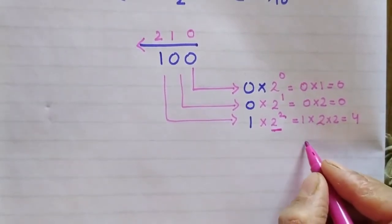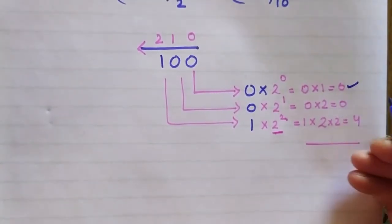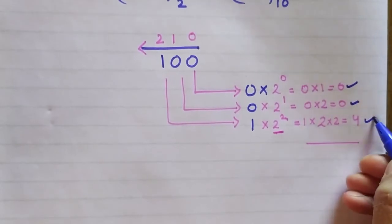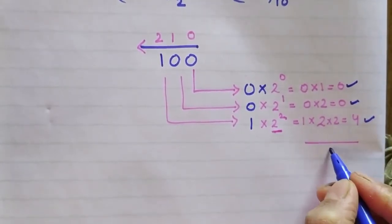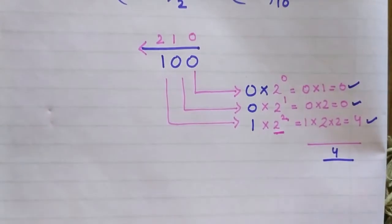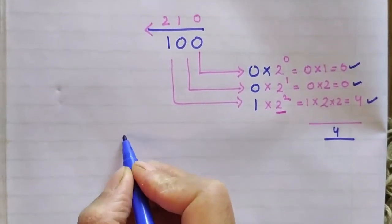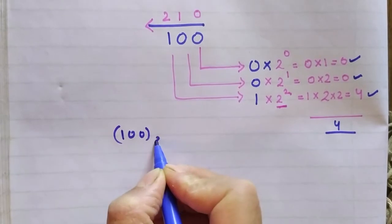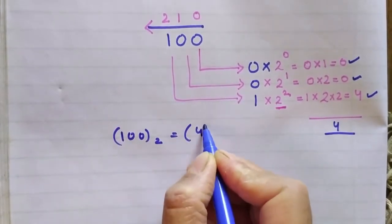At last you have to add all these values: 0 plus 0 plus 4 will give you 4. So the decimal conversion of the given binary number 1, 0, 0 will be 4 in decimal.